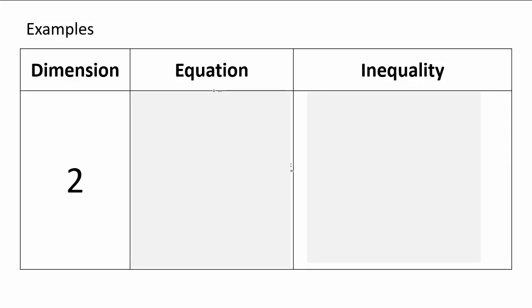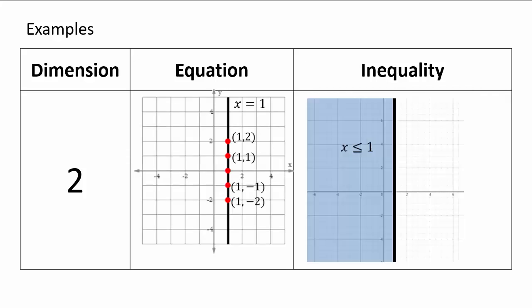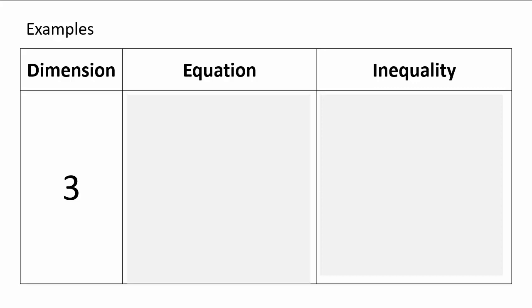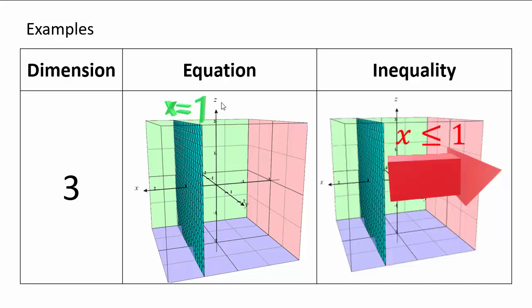In two dimensions, you can have equations representing curves, or inequalities representing a region in the two-dimensional space. In three dimensions, you will have surfaces. For example, x equals 1 means y and z coordinates can be anything. The x coordinate is positive coming out this direction, y coordinates come toward you, and the z coordinate positive is up. Inequalities like x less than or equal to 1 would be all the points behind the green plane.